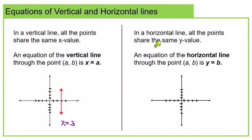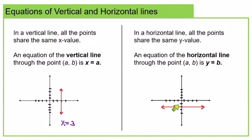Now let's talk about a horizontal line. In a horizontal line, all the points have the same y value, so the equation of a horizontal line is going to be y equals whatever that y value is. In this case, y equals negative 2. Remember, this is a function, and it's just a line whose slope is 0, so you have no x term because the coefficient of your x term in this case would be 0.